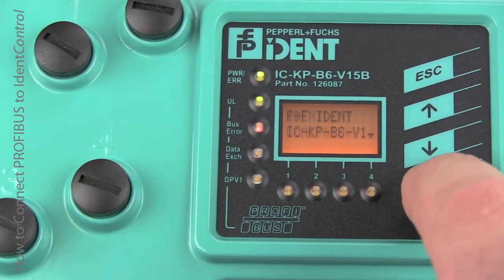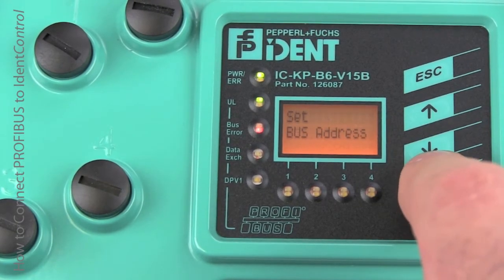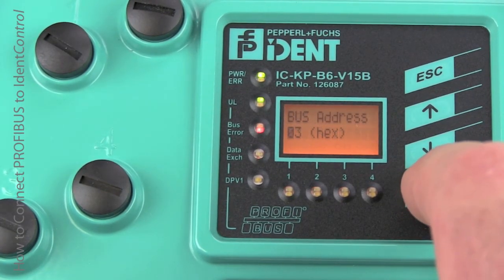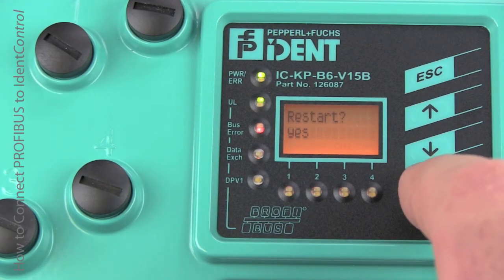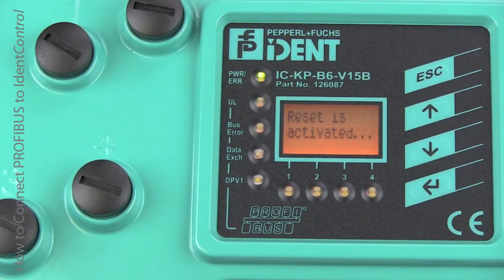Okay, the last thing we need to do is set the address. On the four-channel one, we set the address with the keypad and arrow keys. So use the arrow keys to select the address that you're going to use. Hit Enter to activate it.